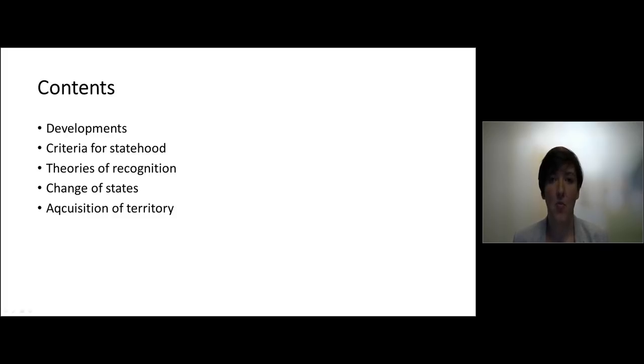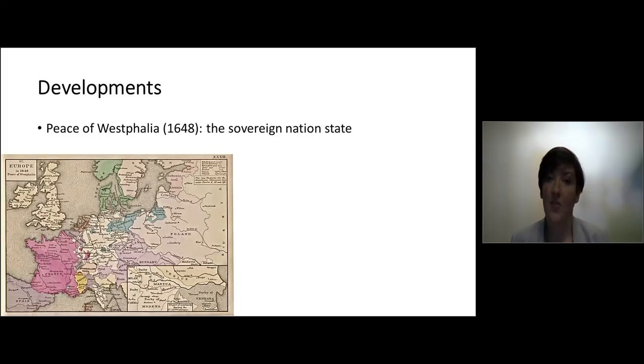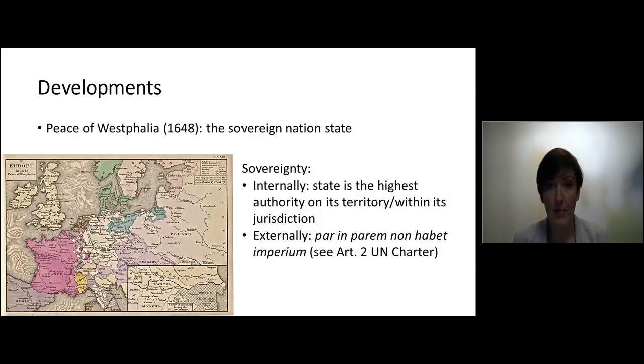First, the birth of our modern nation state. We tend to say that the beginning of our modern state system was the Peace of Westphalia in 1648. At this time the states became sovereign nation states. And sovereign is a key word here. So sovereignty internally means that the state is the highest authority within its territory and within its jurisdiction. Externally this meant that all states are equal and that equals cannot dominate over one another. This principle is still laid down in the UN charter.